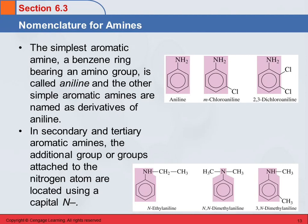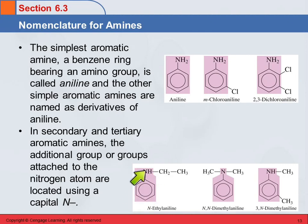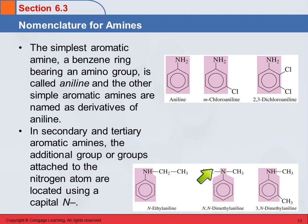You can also have secondary and tertiary aromatic amines. Here we see the basic aniline structure but now with a substituent on the nitrogen. We name this again as a substituted aniline. This is an ethyl group attached to the nitrogen, so it's N-ethyl-aniline. On this other one, we have aniline with two methyl groups on the nitrogen: N,N-dimethyl-aniline.